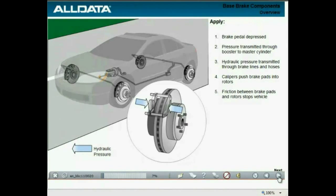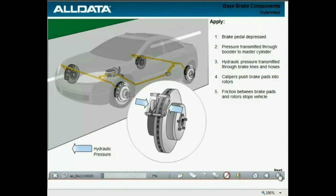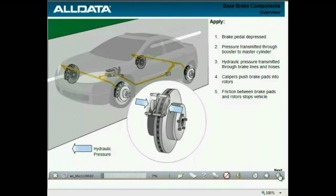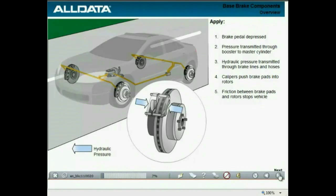When the brakes are applied, the pressure from the brake pedal is transmitted through the brake booster to the master cylinder. From there, the hydraulic pressure travels through the brake lines and hoses. Finally, the pressure reaches the calipers, which react by pushing the brake pads against the rotors. The friction between the brake pads and rotors slows and eventually stops the vehicle.